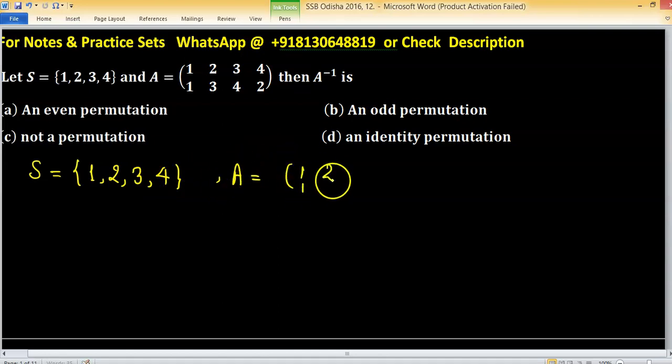The permutation 1, 2, 3, 4 going to 2, 3, 4, 2 means 1 is going to 2, 2 is going to 3, 3 is going to 4, and 4 is going to 2. We all know permutations are one-to-one and onto.